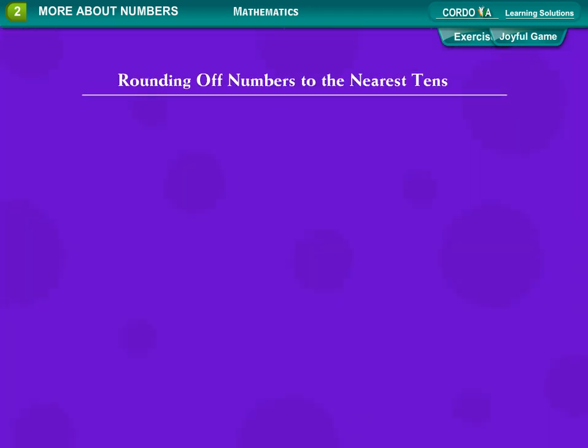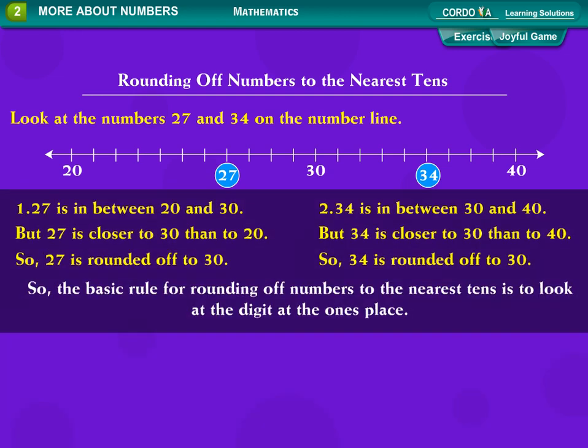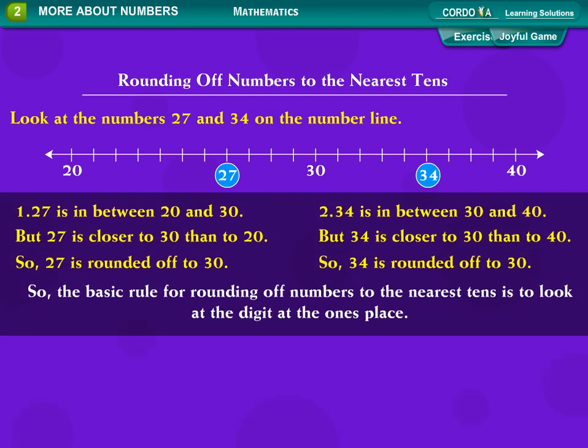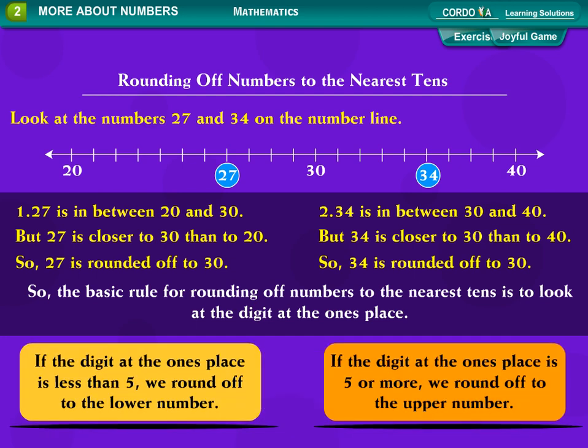Rounding off numbers to the nearest tenth. Look at the numbers 27 and 34 on the number line. 27 is in between 20 and 30, but 27 is closer to 30 than to 20, so 27 is rounded off to 30. 34 is in between 30 and 40, but 34 is closer to 30 than to 40, so 34 is rounded off to 30. So the basic rule for rounding off numbers to the nearest tenth is to look at the digit at the ones place. If the digit at the ones place is less than 5, we round off to the lower number. If the digit at the ones place is 5 or more, we round off to the upper number.